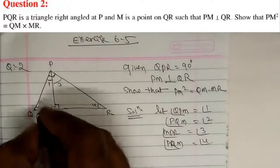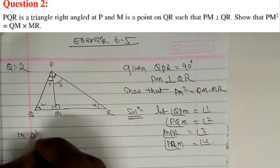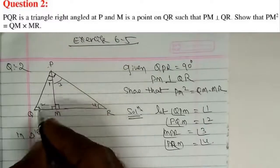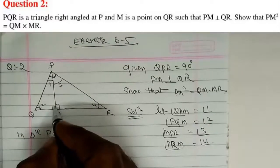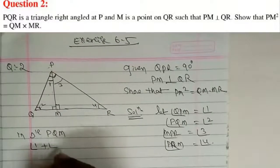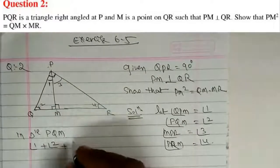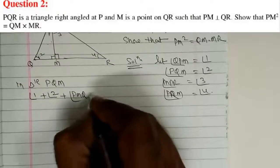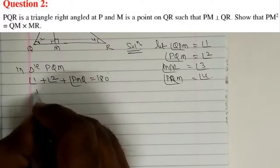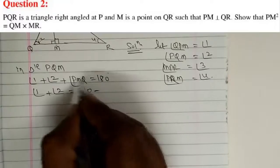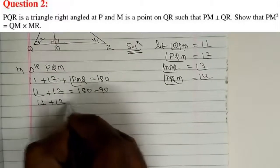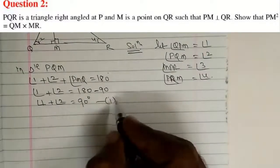In triangle PQM, the sum of all internal angles equals 180°. So angle 1 plus angle 2 plus angle PMQ equals 180°. Bringing PMQ to the RHS, angle 1 plus angle 2 equals 180° minus 90°, which gives angle 1 plus angle 2 equals 90°. We call this Equation 1.